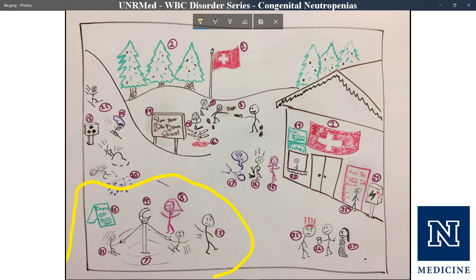We have a moon on top of the carousel pole because cyclic neutropenia has a periodicity of about 21 to 30 days — like a lunar cycle. There's also a sign advertising the daycare for under $200 a day, which is to emphasize that cyclic neutropenia is characterized by having an absolute neutrophil count (ANC) of less than 200.